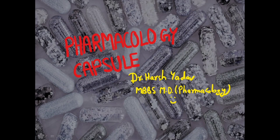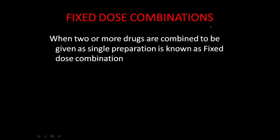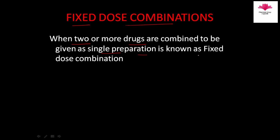Hello students, today we are going to discuss fixed dose combinations. When two or more drugs are combined to be given as a single preparation, it is known as a fixed dose combination. For example, drug A and drug B given as a single preparation is known as a fixed dose combination.